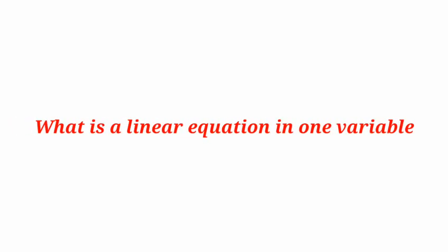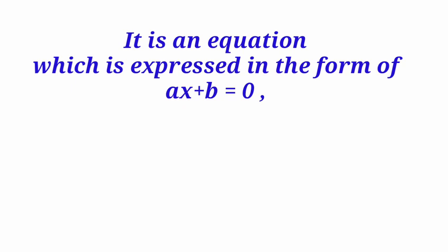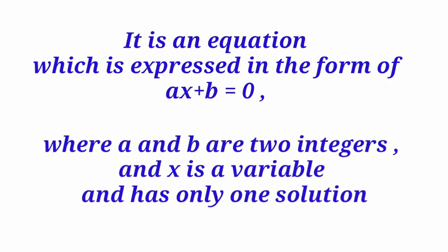What is the linear equation in one variable? It is an equation which is expressed in the form of ax plus b equal to 0, where a and b are two integers and x is a variable and has only one solution.